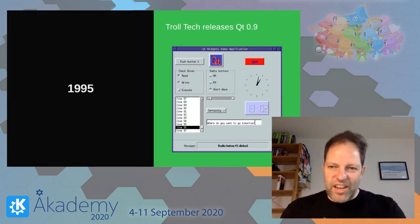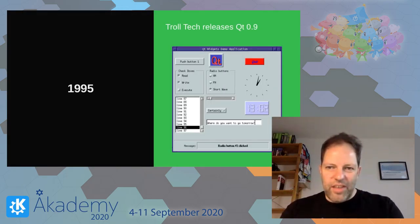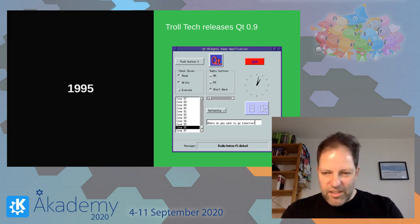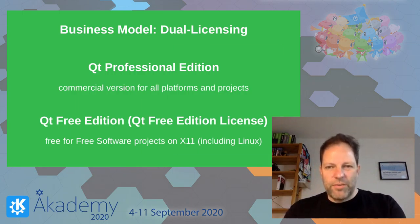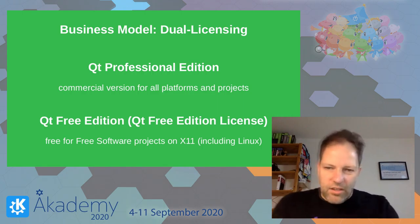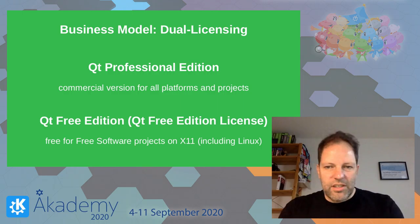The company, which was named Trolltech, released the first version of Qt in 1995 — Qt 0.9 — and it looks like this. You know this example from the documentation; I think it's probably still there somewhere. So this is 1995, and that's the story of Qt. One of the really innovative things Eirek and Howard did was to decide on a dual licensing business model.